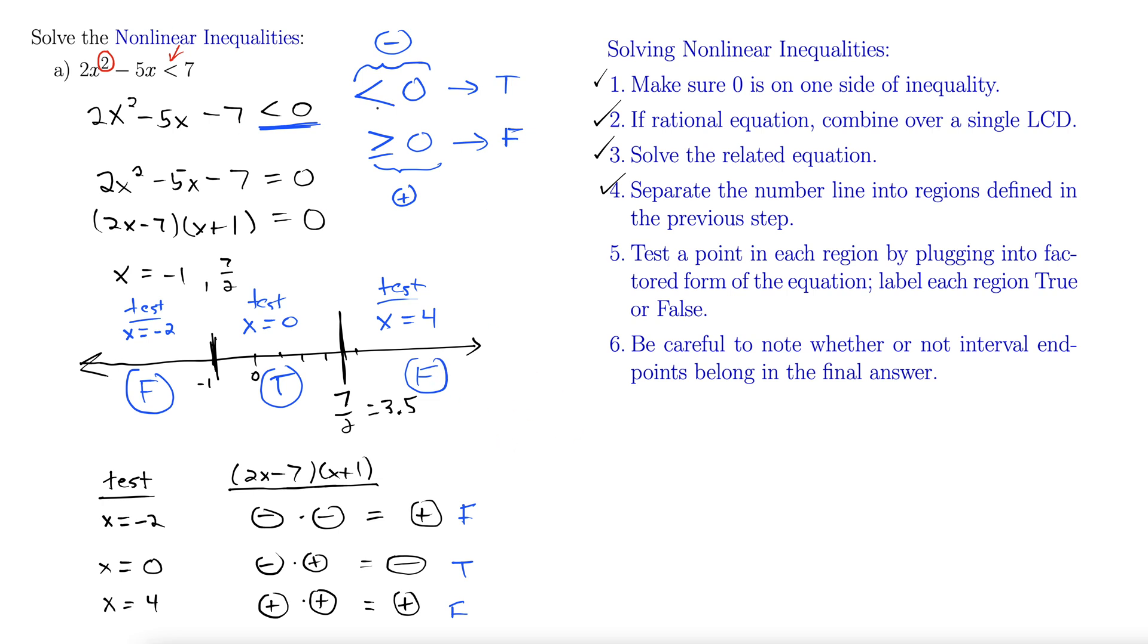Now, since this is less than but not equal to, in this original problem, we're not going to include the endpoints. Because at the endpoints of this interval, our answer is this interval right in here. The endpoints are not included, so we're going to do the soft brackets here to indicate that we're not including those. So our answer in interval notation is negative 1 up to 7 halves.